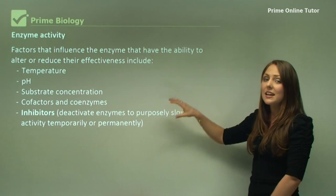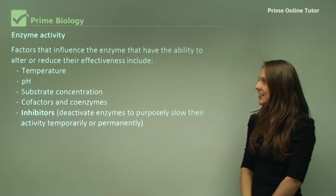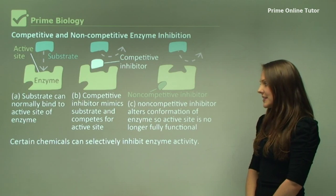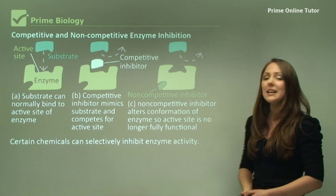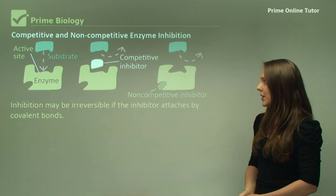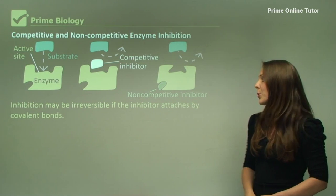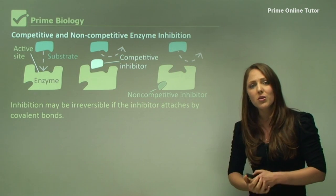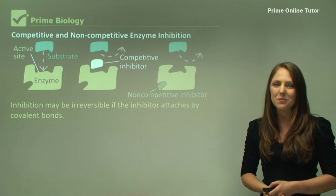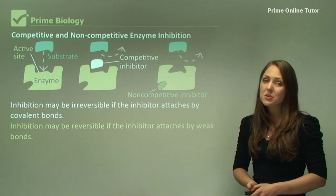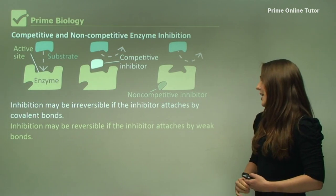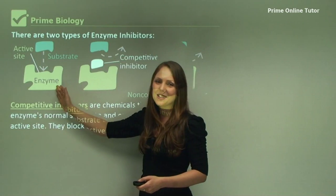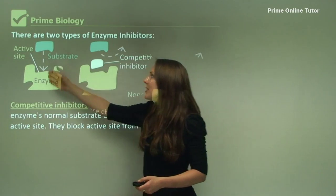Now we're focusing on how inhibitors can slow or reduce enzyme functioning. We have both competitive and non-competitive inhibitors. Certain chemicals can selectively inhibit enzyme activity. Inhibition may be irreversible if the inhibitor attaches by covalent bonds, which are stronger than weak non-covalent bonds. Inhibition may be reversible if the inhibitor attaches by weak bonds. Here we have an enzyme and a substrate that goes to the active site.